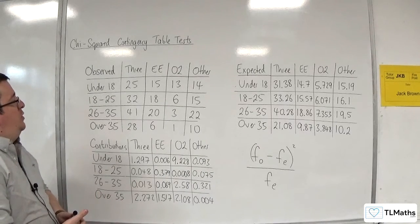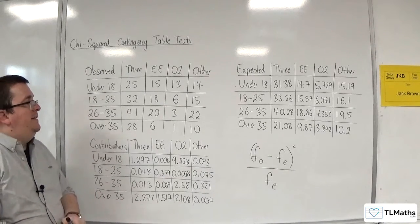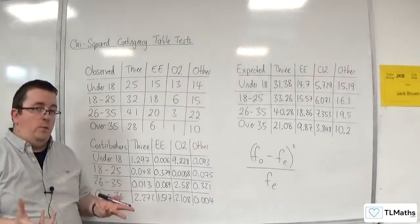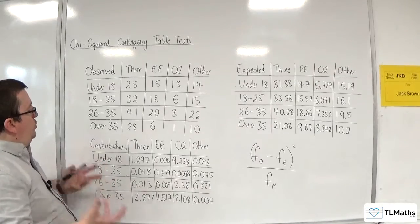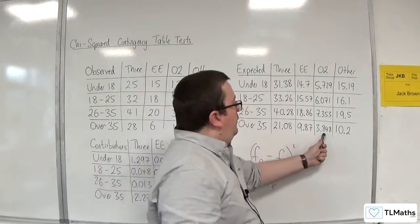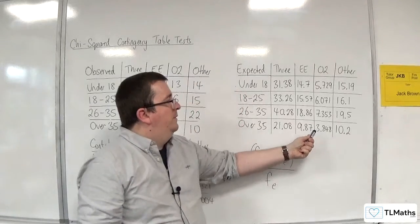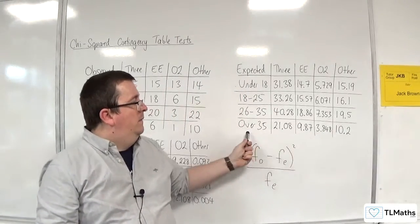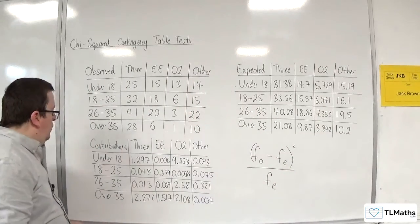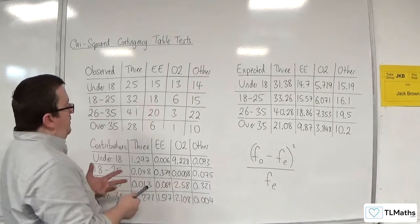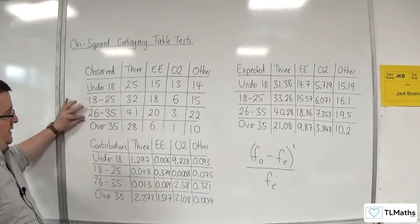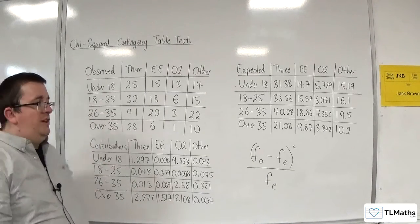Well, what you could do is you could think about grouping together either a column or a row with another one. So you could, for example, say that's where my expected frequency is under 5. So really, I want to get rid of the over 35 row. What you could do is you could group together over 35 and 26 to 35. I could bring that data together, and that should eliminate the problem.